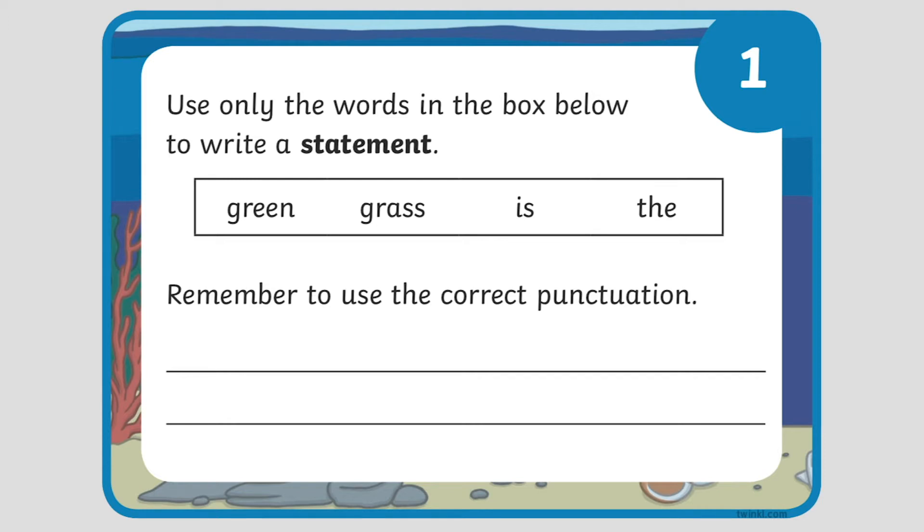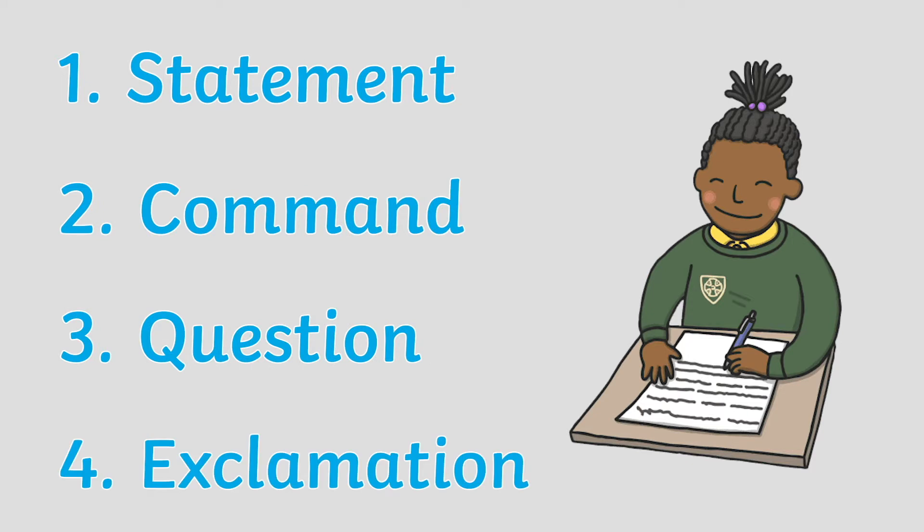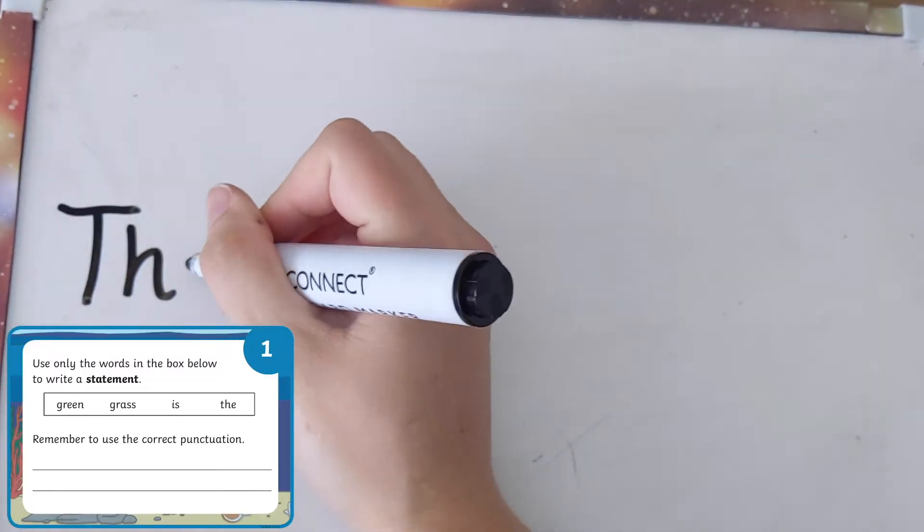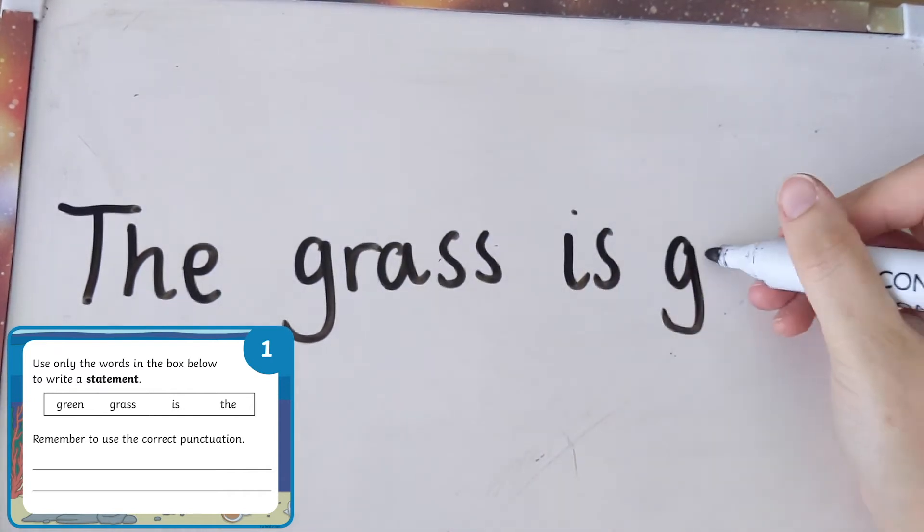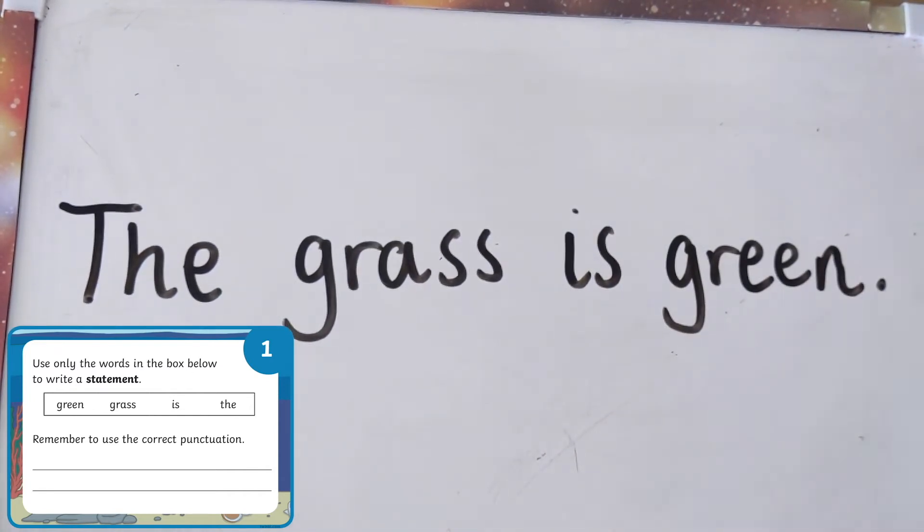In Year 2, children are taught about four different sentence types. First of all, we have a statement, which is a sentence that tells you a fact, opinion or idea. They need to start with a capital letter and end with a full stop.